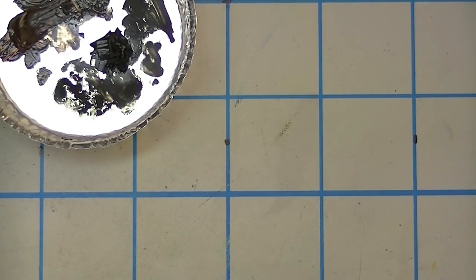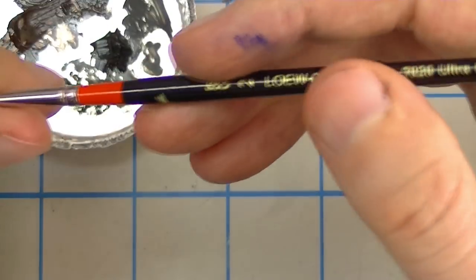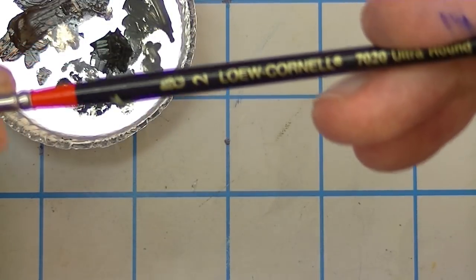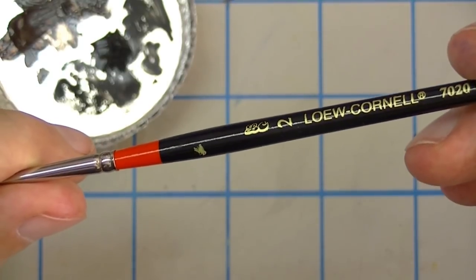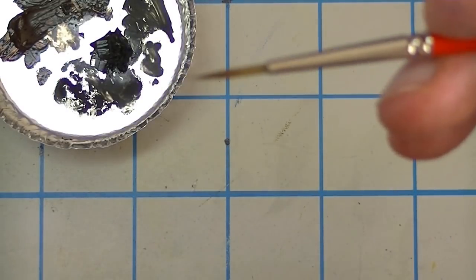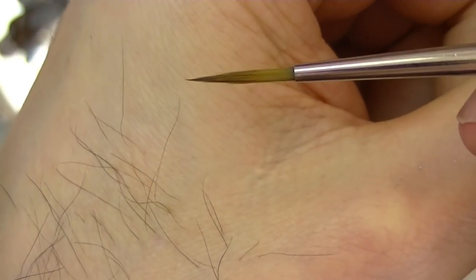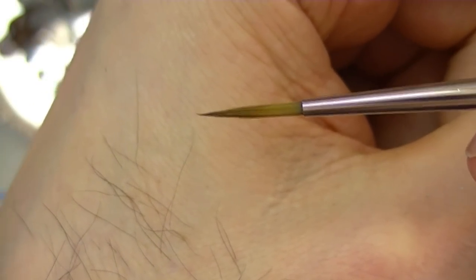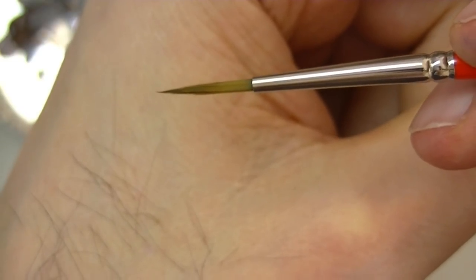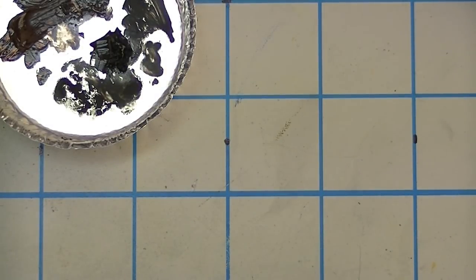The next thing you're going to need obviously to do oil washes is something to apply them with. For that I really love this Loew-Cornell number two ultra round brush. This is recommended by Mike Rinaldi and I just really like them for this. You can see that the tip is very, very pointy and sharp, and that's what you really want for a wash.